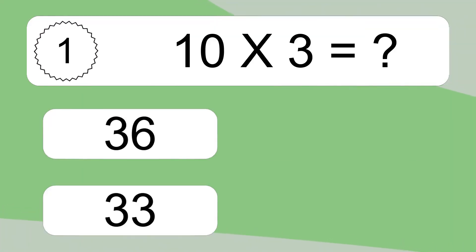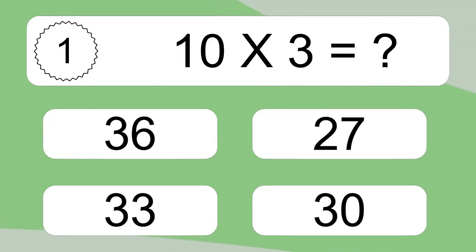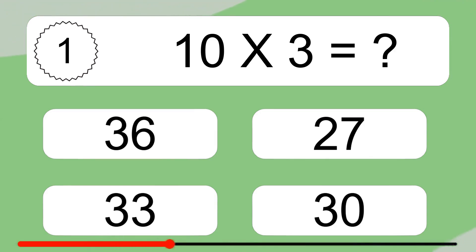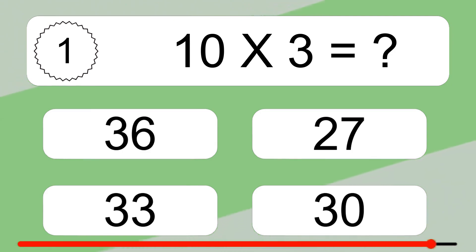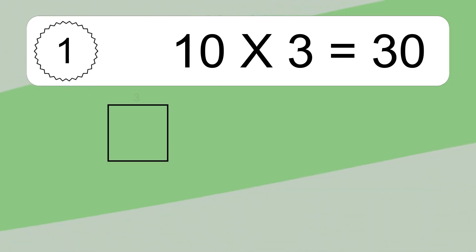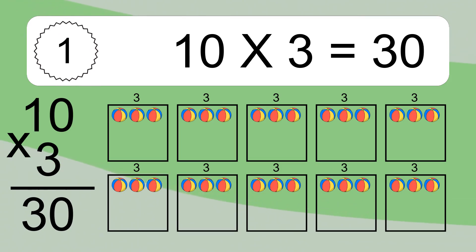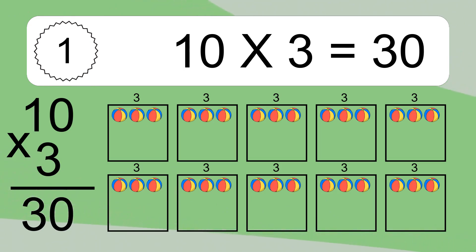10 times 3 equals what? 10 times 3 equals 30. We have 10 boxes, and each box has 3 colorful balls inside. If you count all the balls in all the boxes together, you will have 10 times 3 balls. This equals 30 balls.